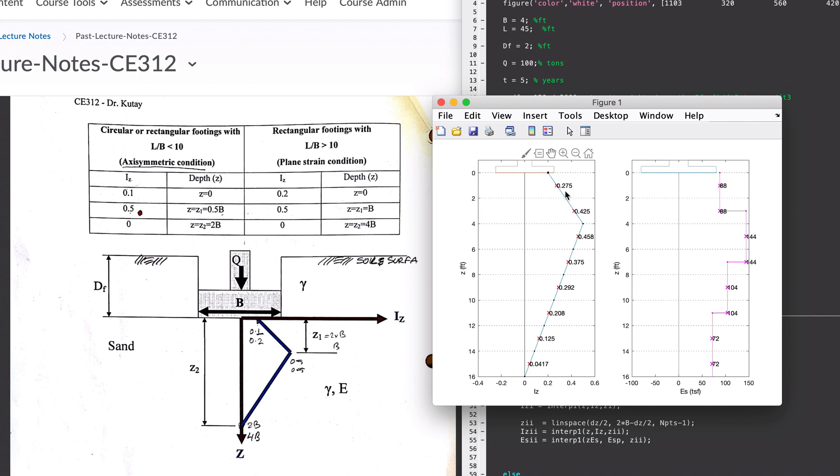If you notice, there are little crosses right in the middle of each sublayer. As you probably know, we need to divide this into multiple sublayers like this, every two feet or every one foot is good. For each sublayer you find the middle IZ in the middle of that sublayer.